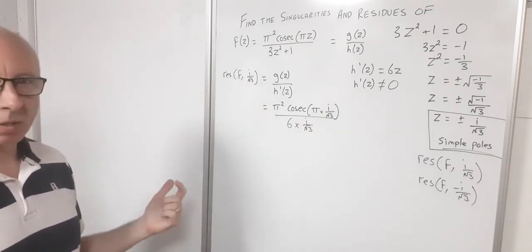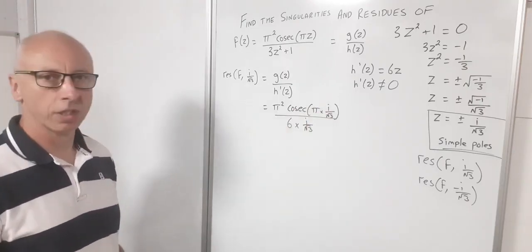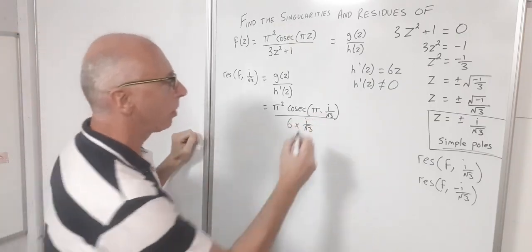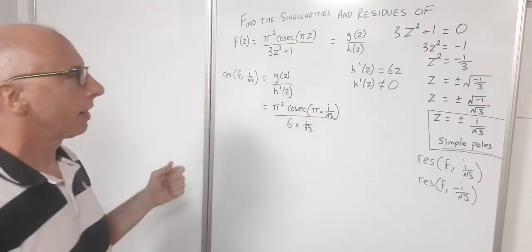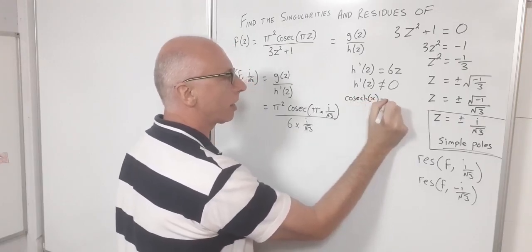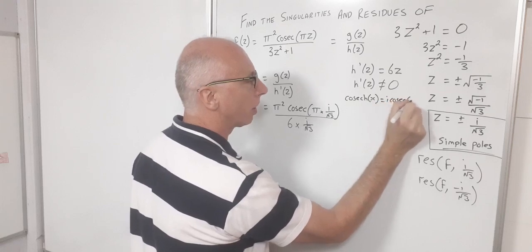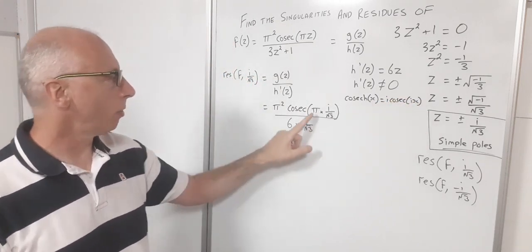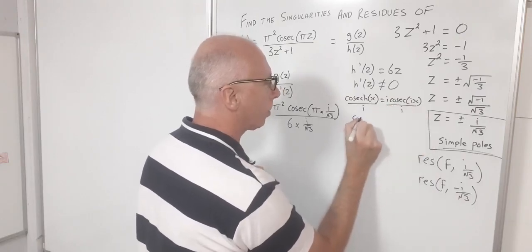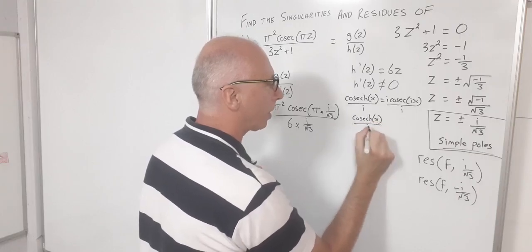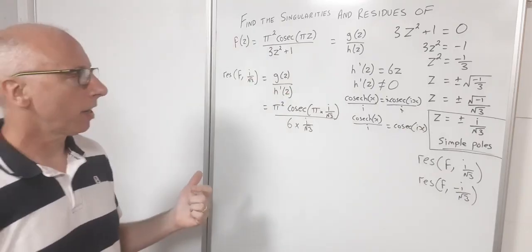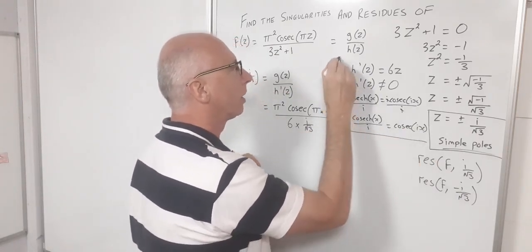Now we have i as the input into the cosecant function. In complex analysis, it's good practice to get i out of trig inputs. We use the identity: csch(x) = i · csc(ix), which rearranges to csc(ix) = csch(x)/i. Applying this, the cosecant of (iπ/√3) becomes the hyperbolic cosecant of (π/√3), divided by i.